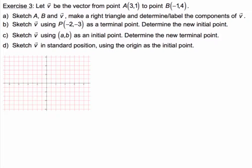In this video on 1.1 vectors we will take a look at exercises 3 and 4. In exercise 3 we have a vector v going from point A to point B. We want to sketch all of that information. So we have the point A is at 3 comma 1 and point B is at negative 1 comma 4.